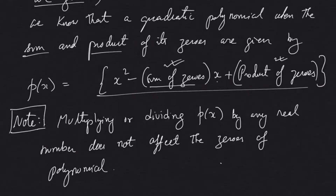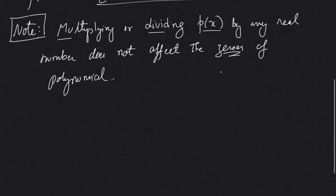Note that we should always remember: multiplying or dividing the given polynomial by any real number does not affect the zeros of the polynomial. That means even if you multiply the quadratic polynomial by any constant, the zeros of the polynomial will remain as they are. Now let's continue with some questions from Exercise 2.2.